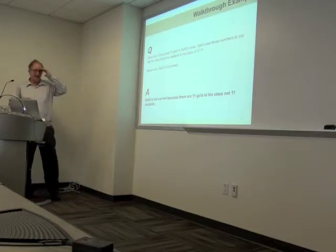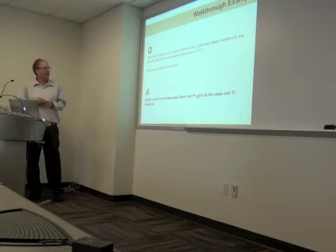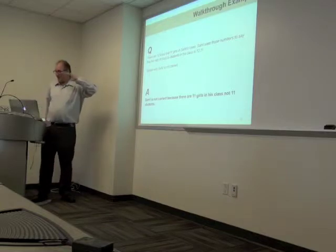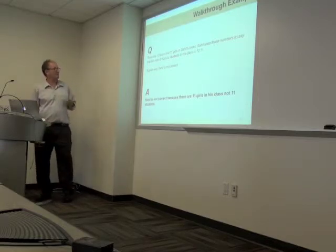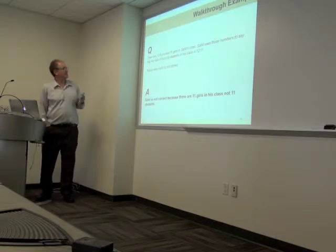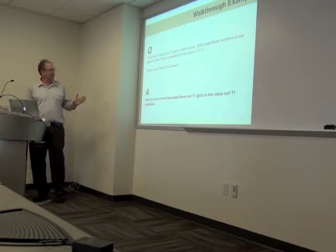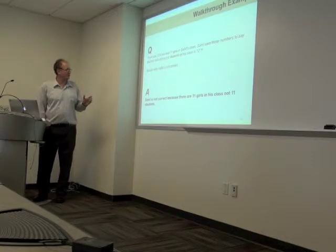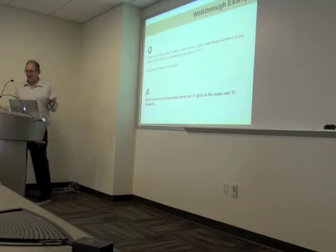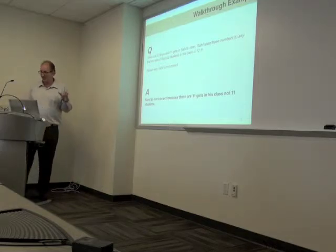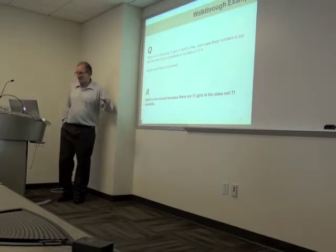To give an example of modern machine learning approaches to automated scoring, we're partnering with a company called LightSide. Here's an example based on the Common Core, with its emphasis on reading and writing about math. The prompt: 'There are 12 boys and 11 girls in Sahil's class. Sahil uses these numbers to say the ratio of boys to students is 12 to 11. Explain why Sahil is not correct.' A student says: 'Sahil is not correct because there are 11 girls in his class, not 11 students.' That answer is correct, even though it doesn't explicitly state the ratio should be 12 to 23.